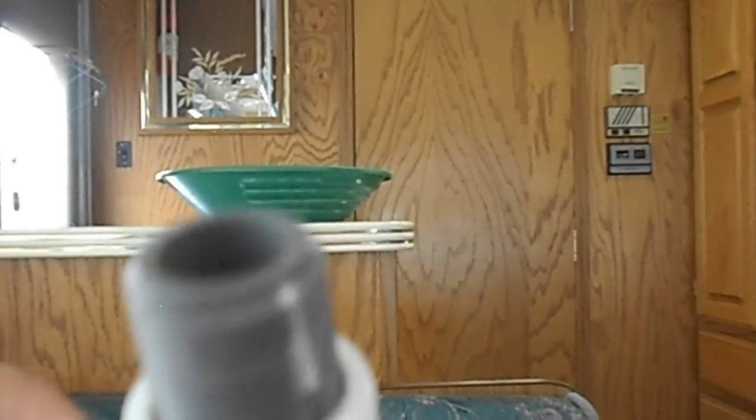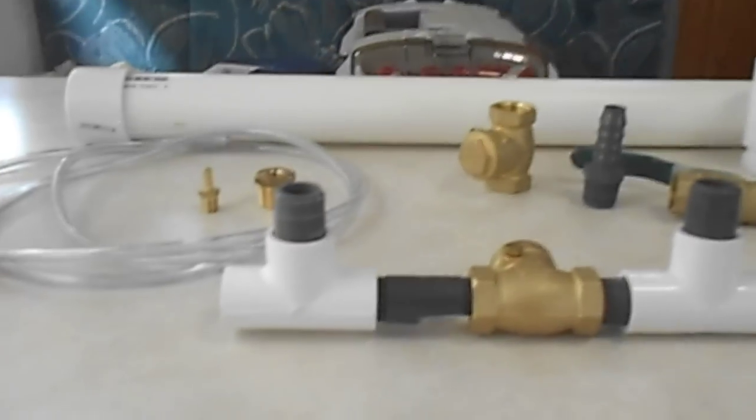Next, you're going to take your other half inch threaded T, screw one of the half inch by close in there, and over here you're going to screw that on so the T is pointing up like that.